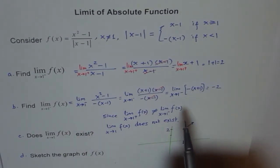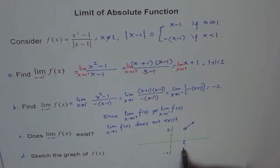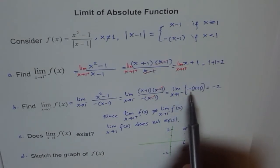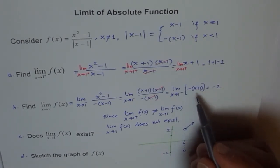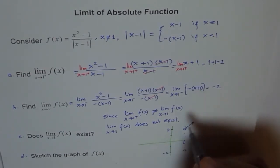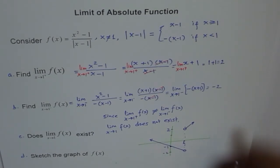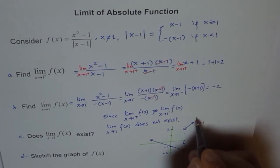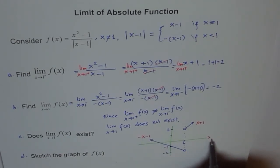When x approaches 1 from the negative side, we approach -2. So there is a hole at (1, -2). The equation on this side is -(x - 1), which simplifies to -x + 1, or equivalently -(x + 1) after factoring. The slope is -1, so the line goes downward. The equation on the right side is x + 1, and on the left side is -(x + 1). That is how the full function is graphed.